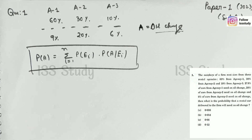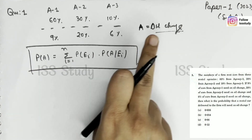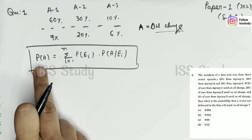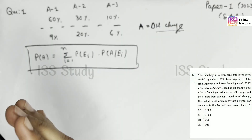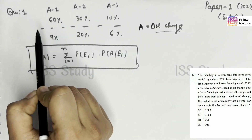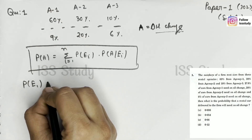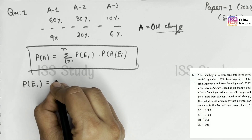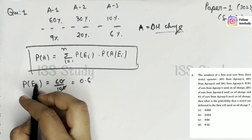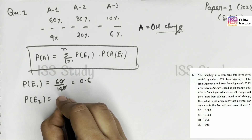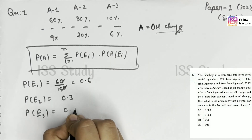I'm reading that line again: what is the probability that the rental car delivered to a firm will need an oil change? That is why we want to find probability of A. It is given that a member of a firm rents cars from three rental agencies. 60% from agency 1, so probability of E1 — where E1 denotes agency 1 — is 60%, which means 0.6. Similarly, E2 represents agency 2, so probability of E2 is 30%, meaning 0.3. And probability of E3 is 10%, meaning 0.1.